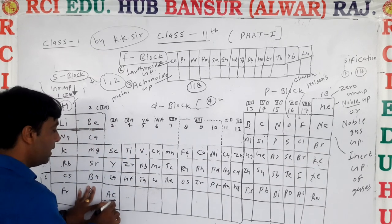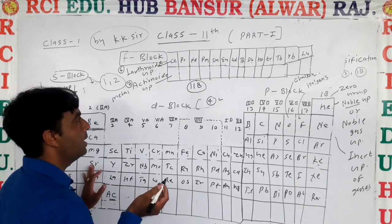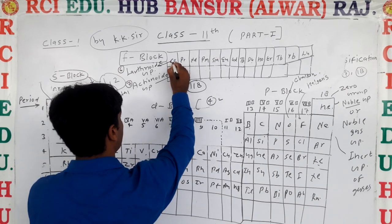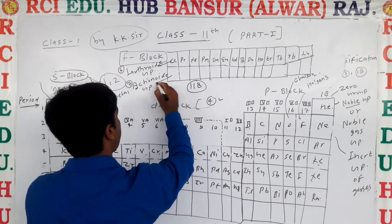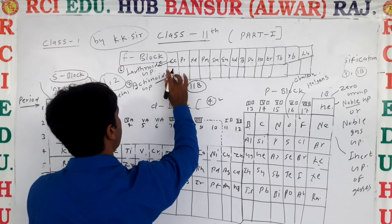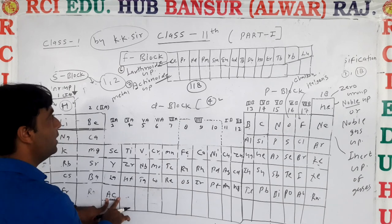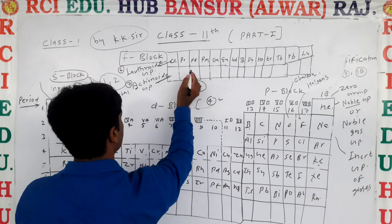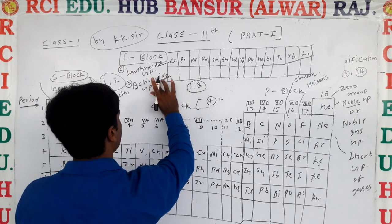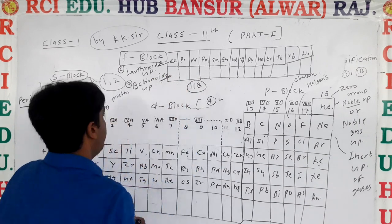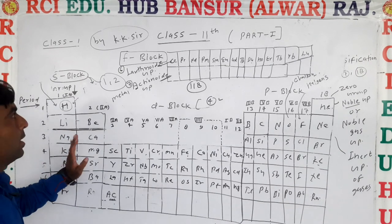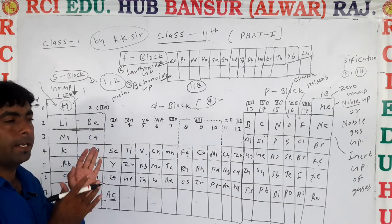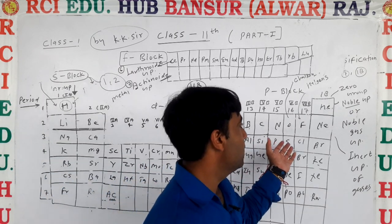Starting from actinium, that is called the actinide group. The actinide group also starts from Ac. In the actinide group, we discuss the f-block elements. That is the modern periodic table representation. In the next class, further study will be described.